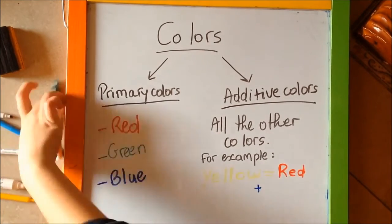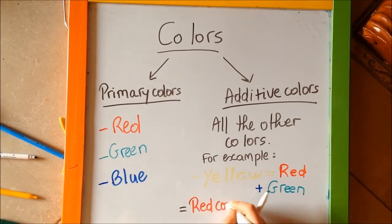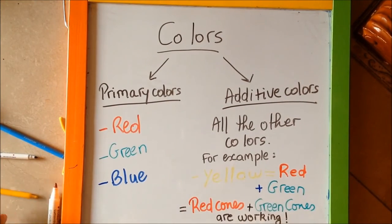Let's take, for example, yellow. Yellow is a mixture between red and green. So to perceive a yellow object, both of your red and green cones are working together.